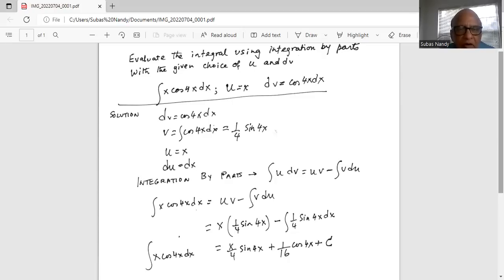So integration of x cosine 4x dx is equal to u v minus integration of v du. Our u is x. Our v is one-fourth sine 4x minus integration of one-fourth sine 4x dx.